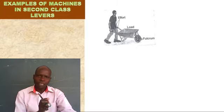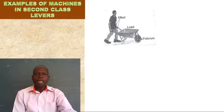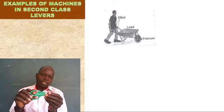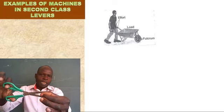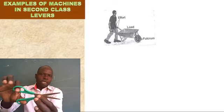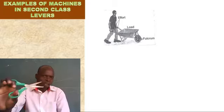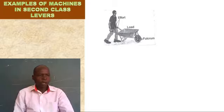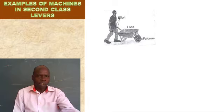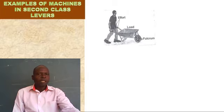This man is using this wheelbarrow. He wants to carry something with it. Now, where is he carrying? For the first class lever, the load was here and the pivot here. Always where they're holding it, that's where the effort is. Meaning where this gentleman is holding it — that's where the effort is. Then you come here — whatever it carries, maybe sand — they use them in building sites.